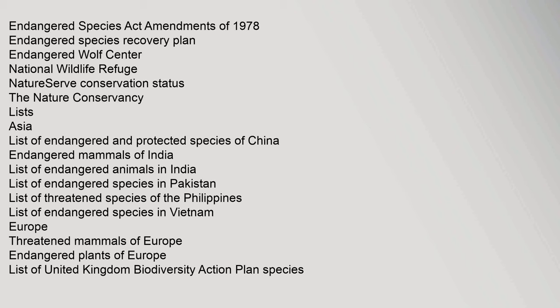Lists by Region. Asia: List of Endangered and Protected Species of China, Endangered Mammals of India, List of Endangered Animals in India, List of Endangered Species in Pakistan, List of Threatened Species of the Philippines, List of Endangered Species in Vietnam. Europe: Threatened Mammals of Europe, Endangered Plants of Europe, List of United Kingdom Biodiversity Action Plan Species, List of Extinct and Endangered Species of Italy, List of Extinct and Endangered Species of Lithuania. North America: List of Endangered Plants in North America, List of Endangered Species in North America.